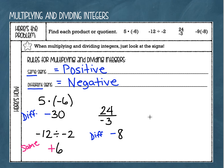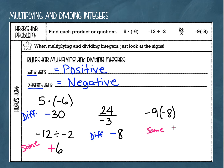My last example is negative 9, and right in parentheses I have negative 8. Remember, that means multiplication. I'm going to look at my signs and ask: are they the same or are they different? Two negatives — same sign. Since they're the same, my answer is going to be positive. And then I just say 9 times 8 is 72.